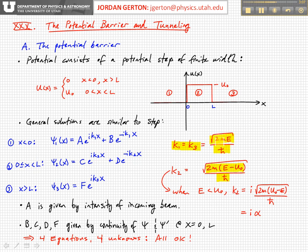We don't have a sixth coefficient because there's nothing on the right-hand side — nothing to the right of L which can reflect the wave function. So we don't have a left-moving wave in that region; we only have a right-moving wave. And if you remember from the last lecture, when you have a positive i·k·x, that means we're dealing with right-moving solutions.